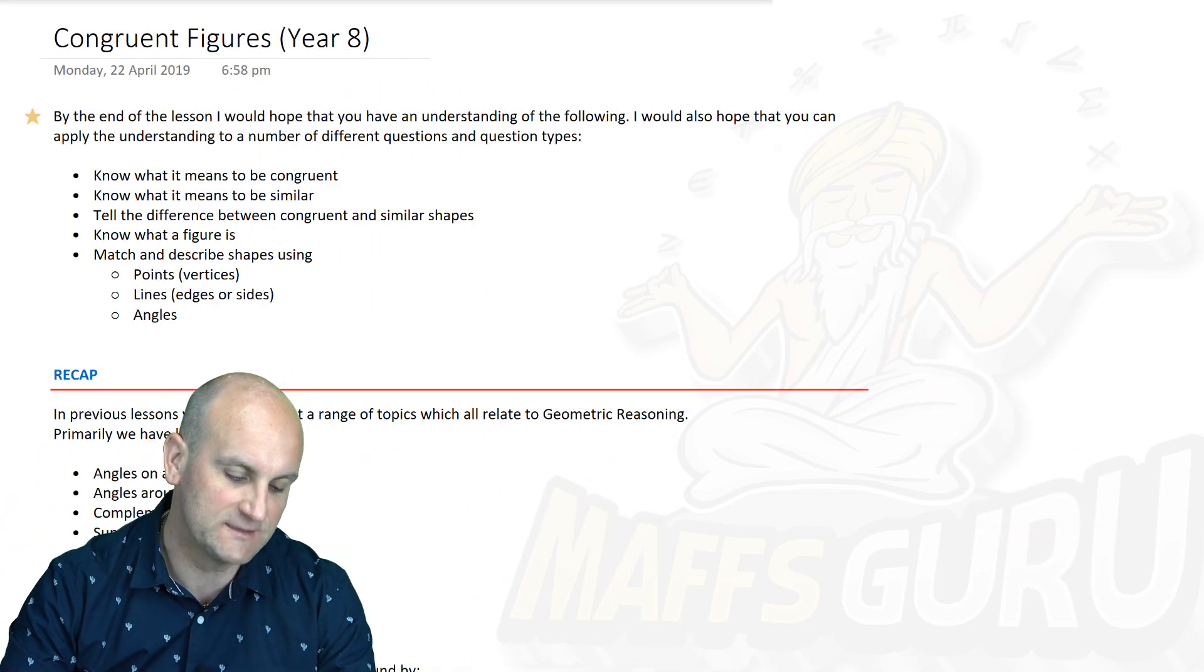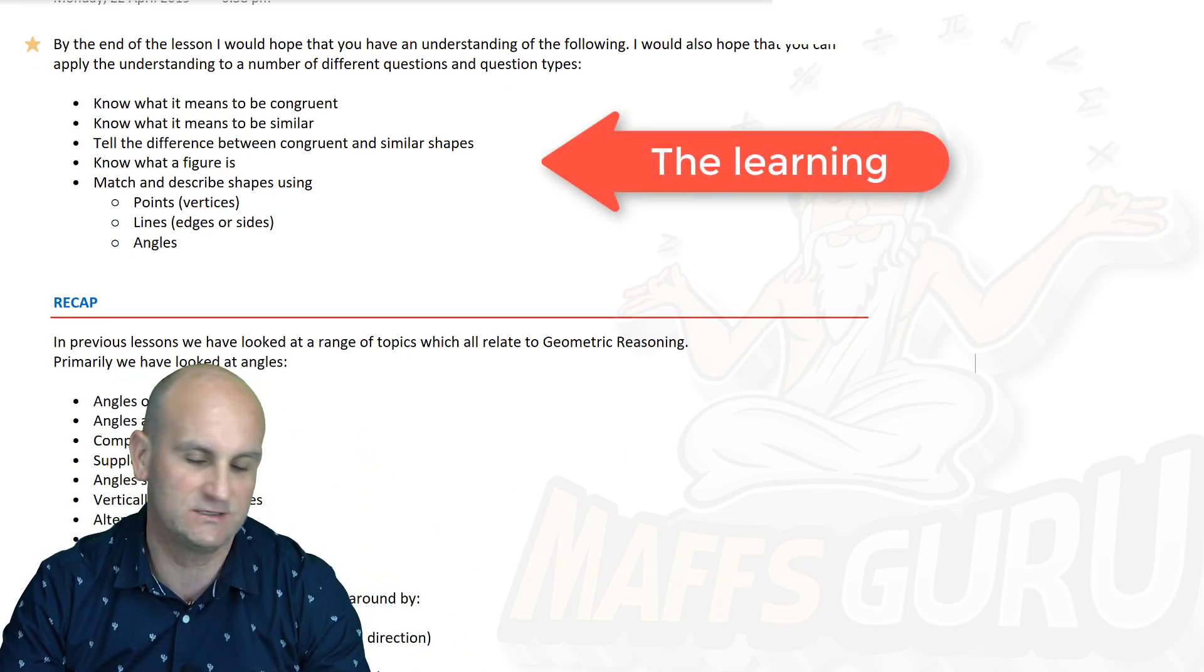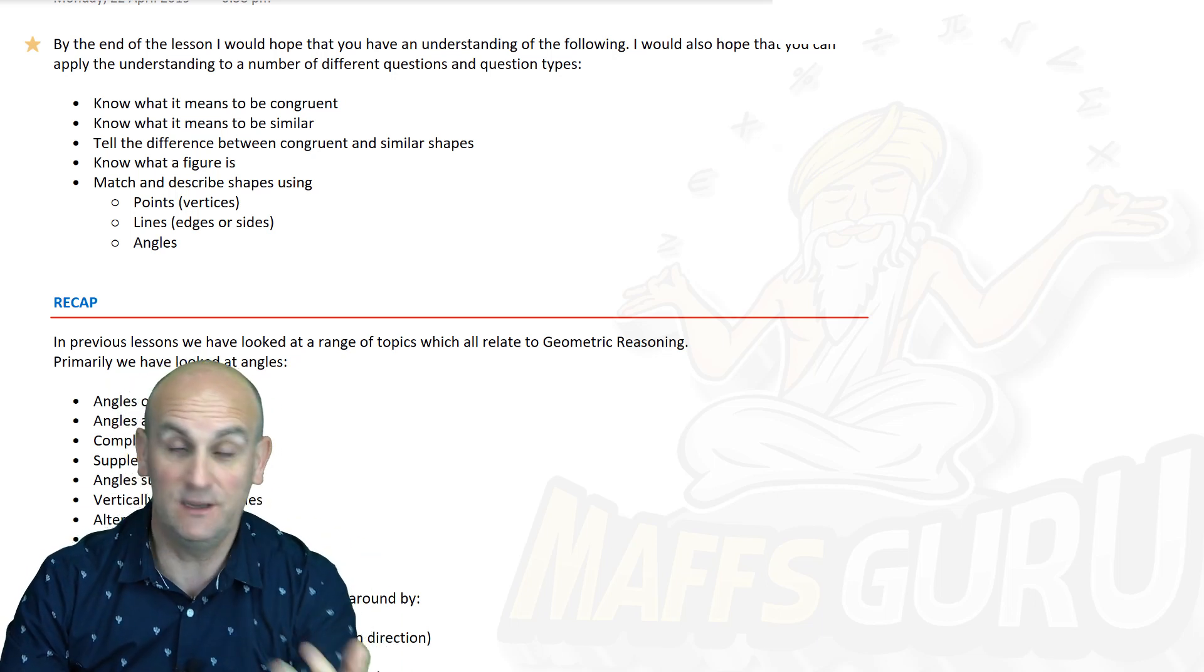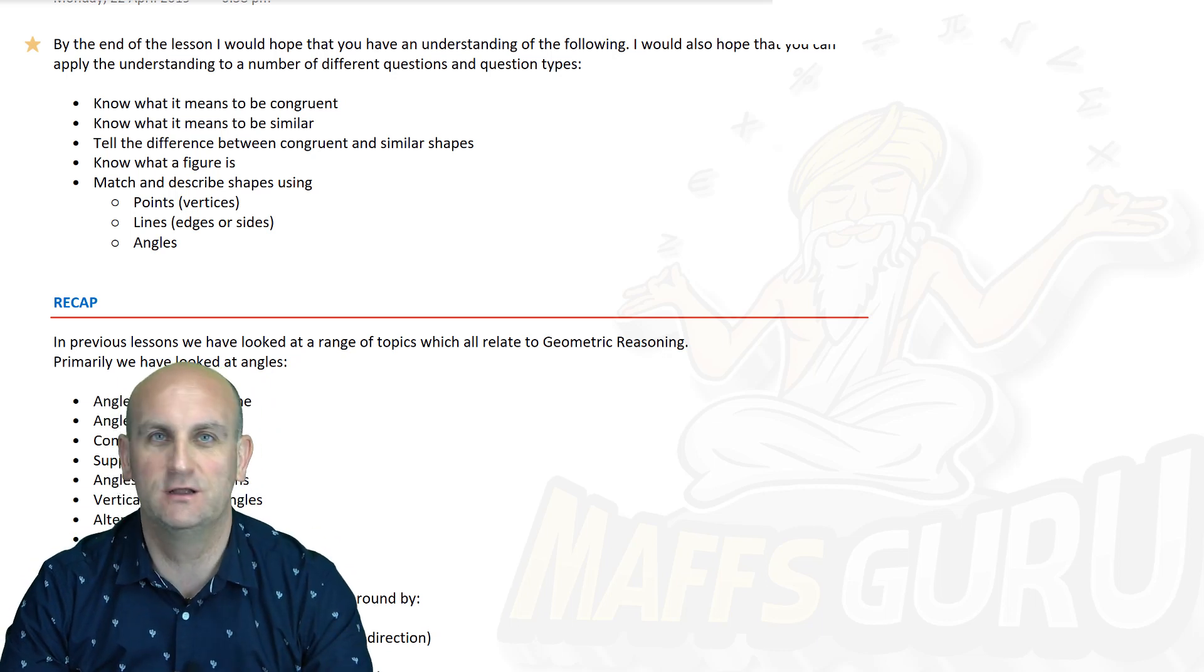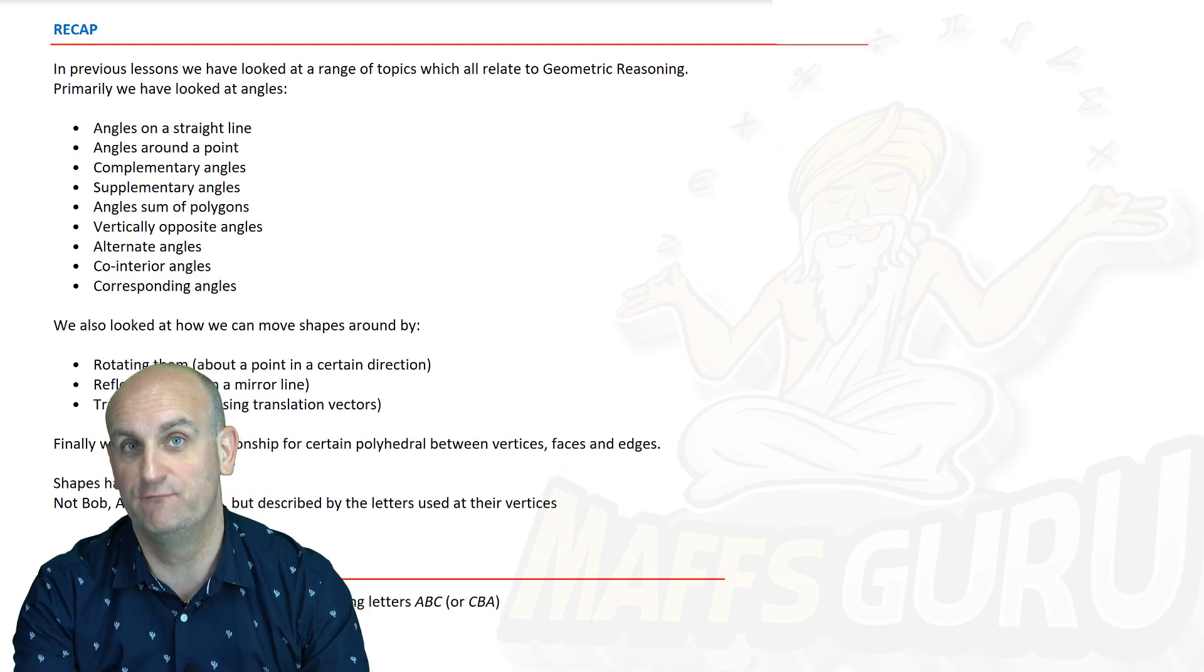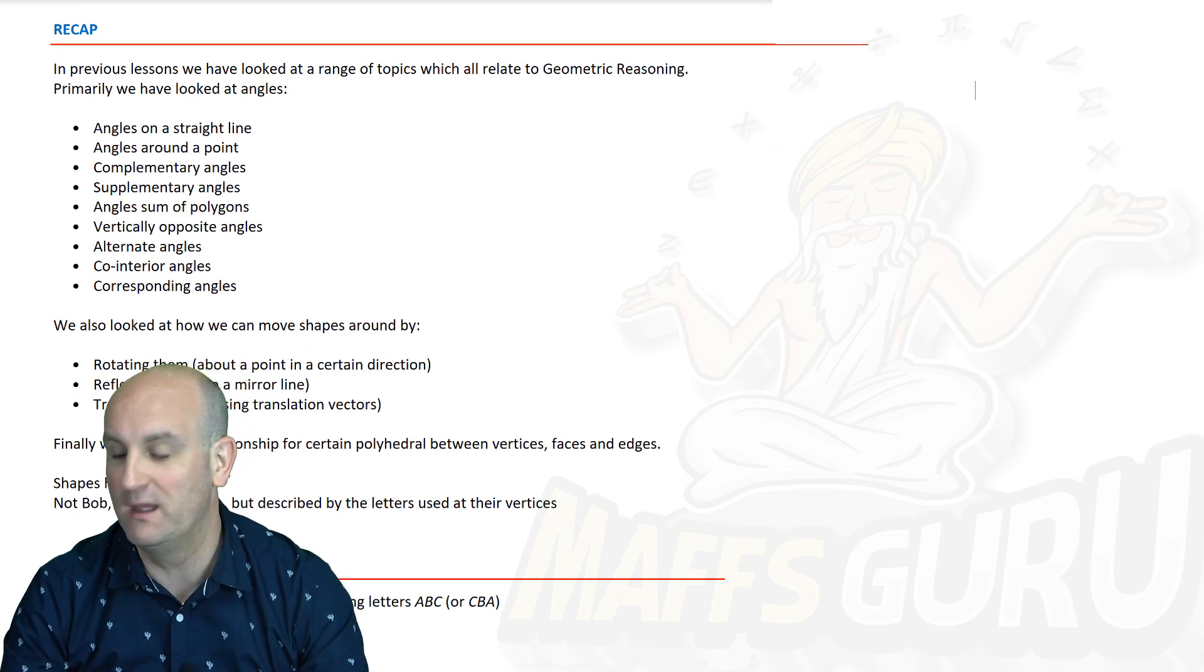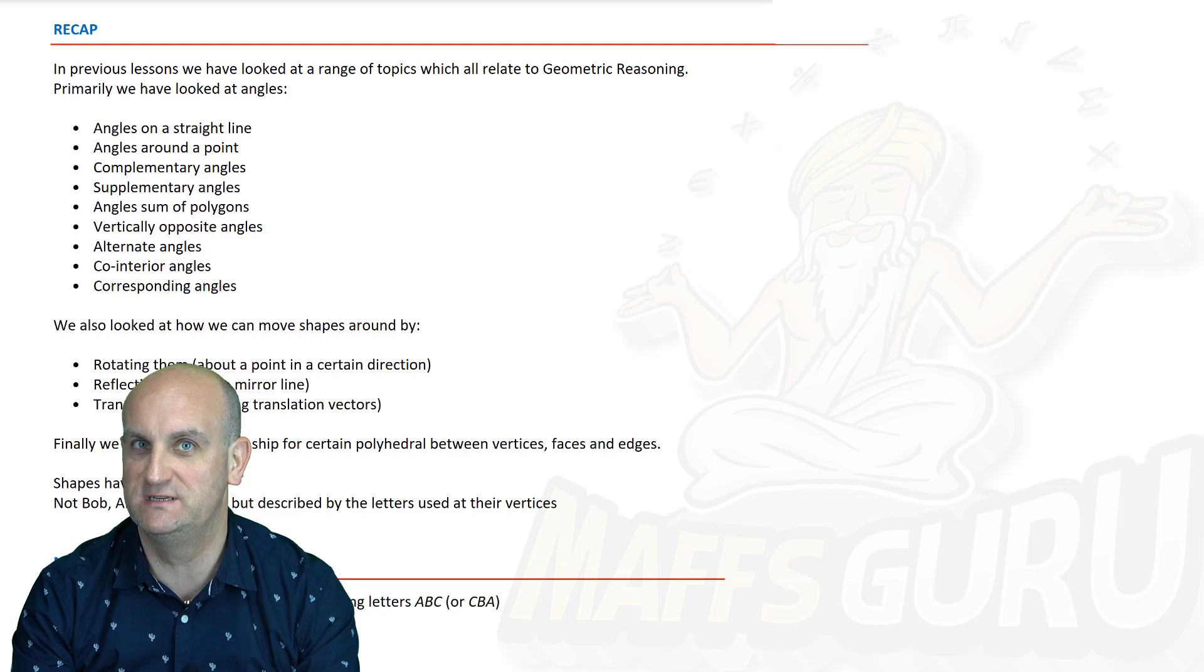Okie dokie, so congruent figures. Basically by the end of this lesson, as you will see above, there is an arrow pointing to what's congruent, what does it mean to be similar, what's the difference between congruence and similarity. You know what a figure is and be able to talk about shapes in terms of points, lines and angles. Now this is actually recapping from a lot of previous videos.